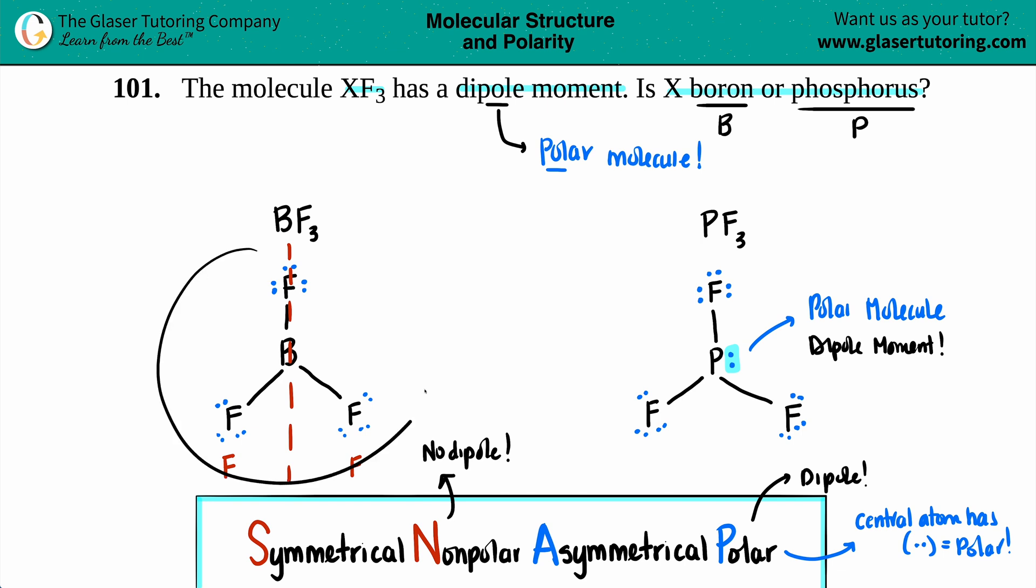If we just quickly look back at the boron one, boron, everything was symmetrical. I had two fluorines, right? I split this one fluorine down the middle. So this was symmetrical, which means that it's nonpolar.